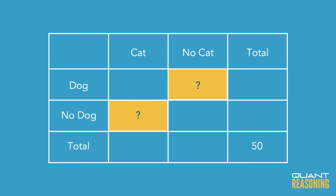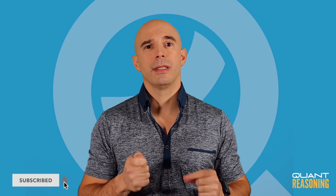It's important to remember that the total — which in this case was given as 50 households — is going to be the sum of the four main cells: your 'both' cell, your 'neither nor' cell, and your 'dogs but no cats' and 'cats but no dogs' cells. The sum of those four cells is 50.